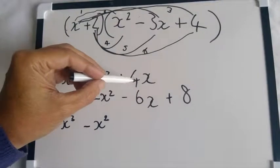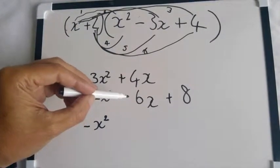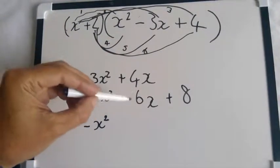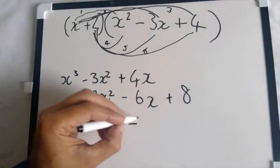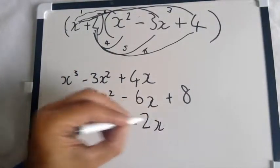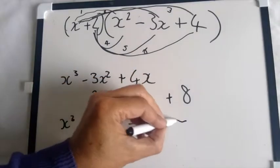Right. Now we've got four positive x's here and we've got minus six x's here, so that's four minus six of the x's, so that's minus 2x. And then just our last term is our plus 8.